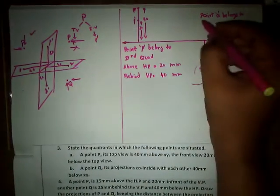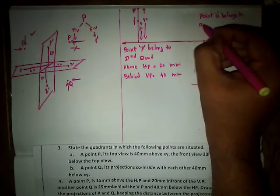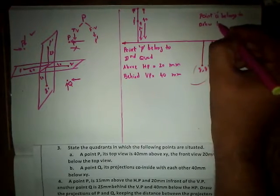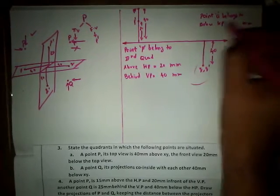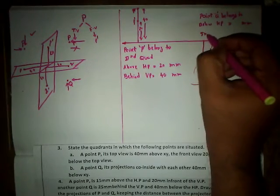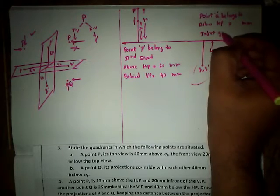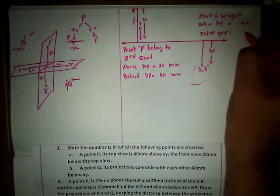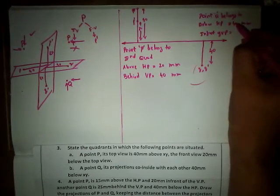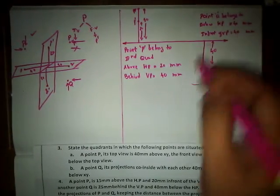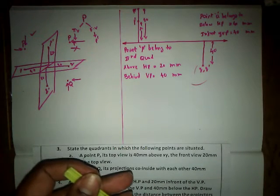According to the fourth quadrant designation: below HP equals 40 mm, and in front of VP equals 40 mm. Since both projections coincide at 40 mm below XY, the point Q is 40 mm below HP and 40 mm in front of VP.